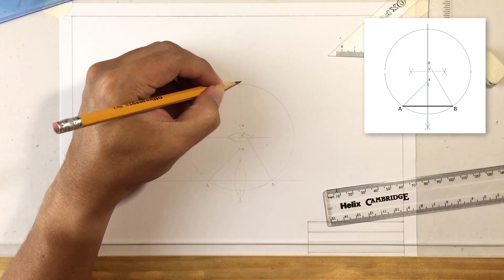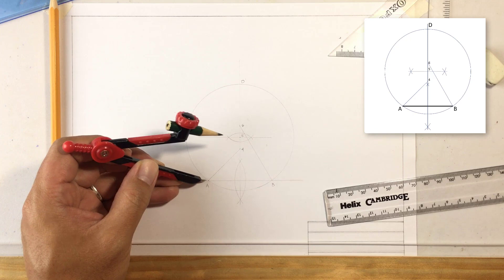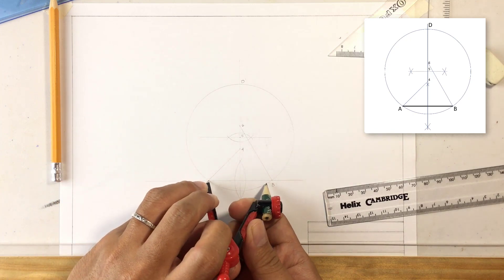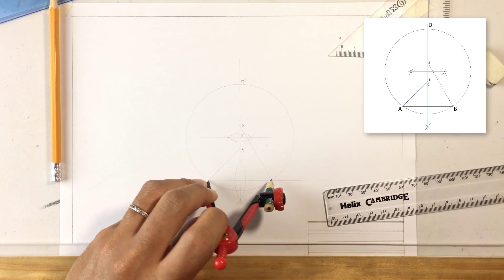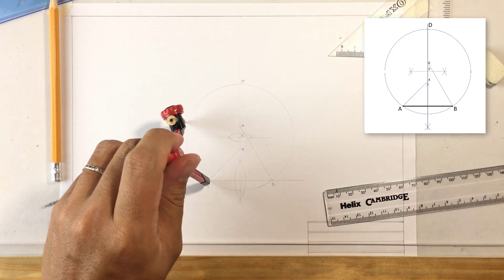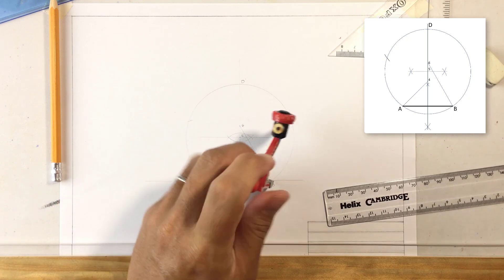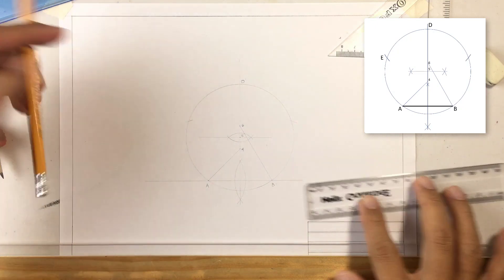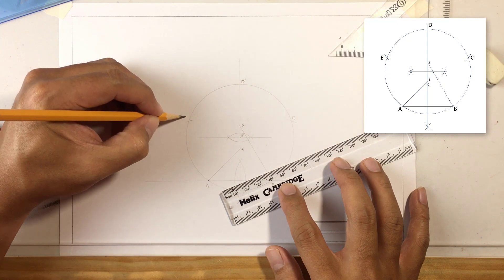The top one will be D. Once your circle is done, you take the length of AB and then from A, you mark on the circle and then move to B to mark another point on the circle. Label these points. This will be C and E.